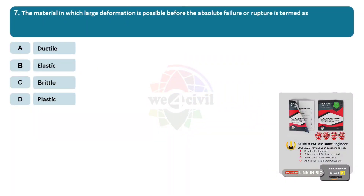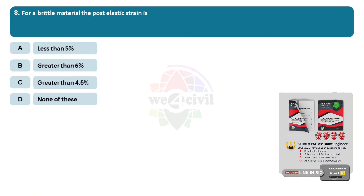The material in which large deformation is possible before the absolute failure or rupture is termed as? Options: A, ductile. B, elastic. C, brittle. D, plastic. Answer: Option A, ductile material. Next question: For a brittle material, the post-elastic strain is? Option A, less than 5%. Option B, greater than 6%. Option C, greater than 4.5%. Option D, none of these. Answer is Option A, less than 5%.